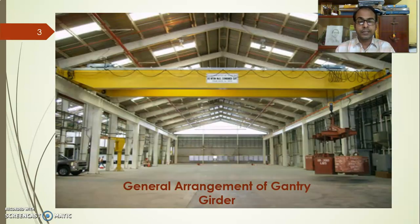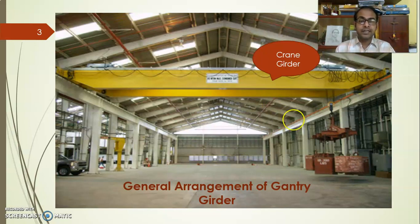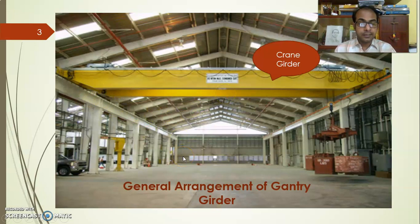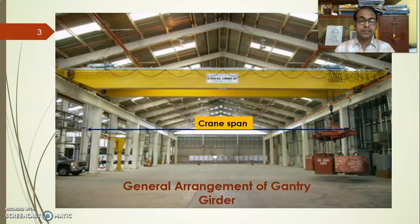Let us look at the general arrangement of a gantry girder. We can see here the crane girder — this is the overhead crane system. The crane unit is provided with two crane girders, which are supported over the gantry girders. The gantry girders are provided with a rail above them, and the crane girder rests with a wheel over the gantry girders. This span is the crane span and this is the gantry span.